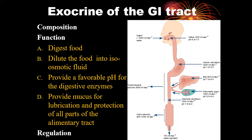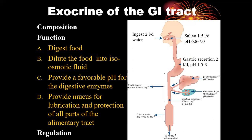These secretions have to be regulated so that you produce a specific amount in each segment. Water ingested per day is two liters. Saliva production is 1.5 liters per day at a pH of 6.8 to 7. Gastric secretions are two liters per day at a pH of 1.5 to 3 due to hydrochloric acid. The liver produces 0.5 liters of bile per day.